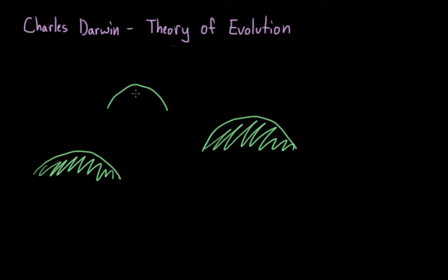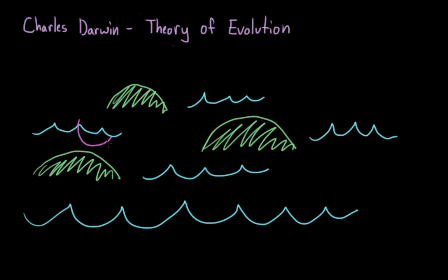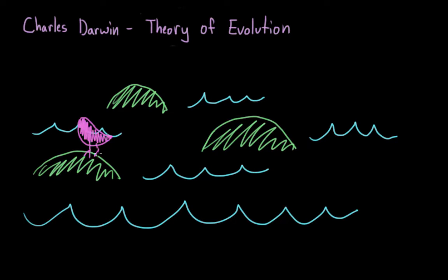Remember that the theory of evolution was put forth by Charles Darwin. And he noticed that small variations in species, we'll use the beaks of finches as an example, he noticed that they varied over different locations. So these finches would have short beaks on one island and long beaks on another.